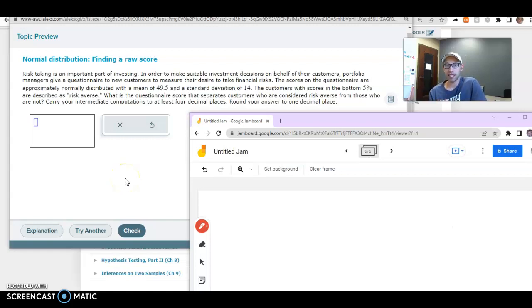Okay, so we have a Z-score conversion problem here, a standard normal conversion problem. As you might get from the name conversion, there's really two directions that these types of problems can go.